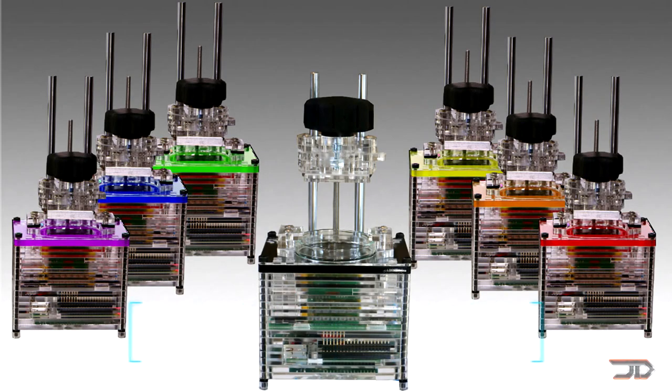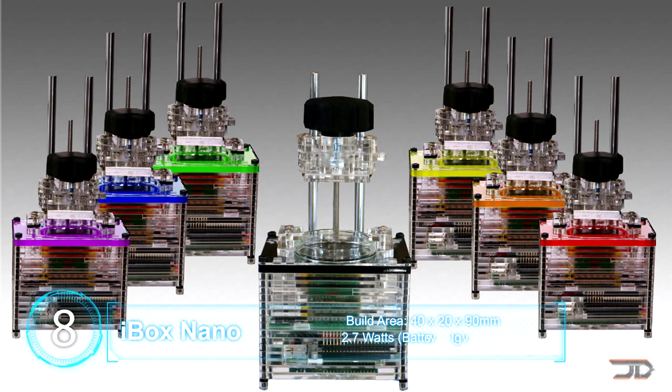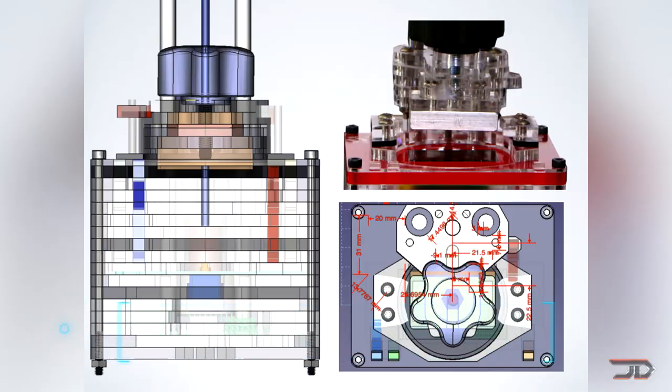At number 8, the iBox Nano. This affordable printer starts at $300 and is one of the smallest and quietest printers out on the market. The unique resin can print your favorite toys, jewelry, and even crafts.